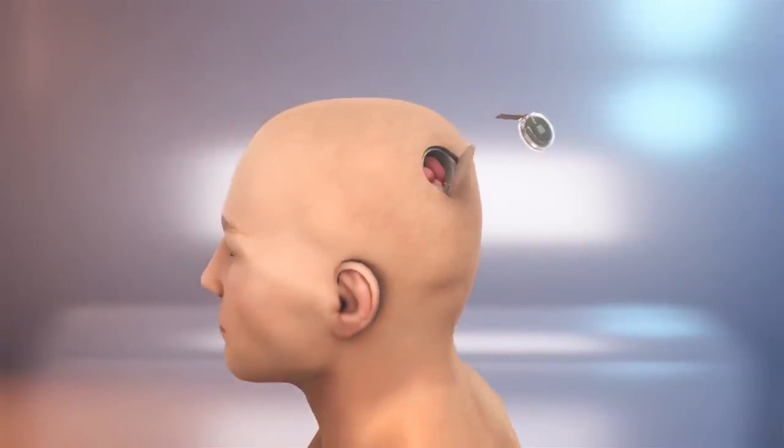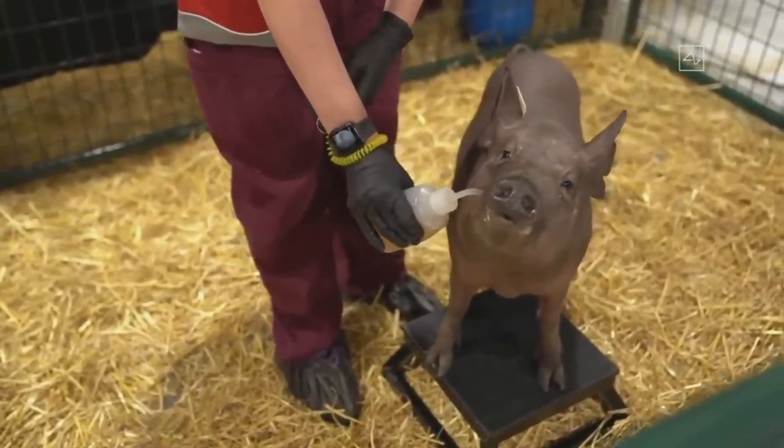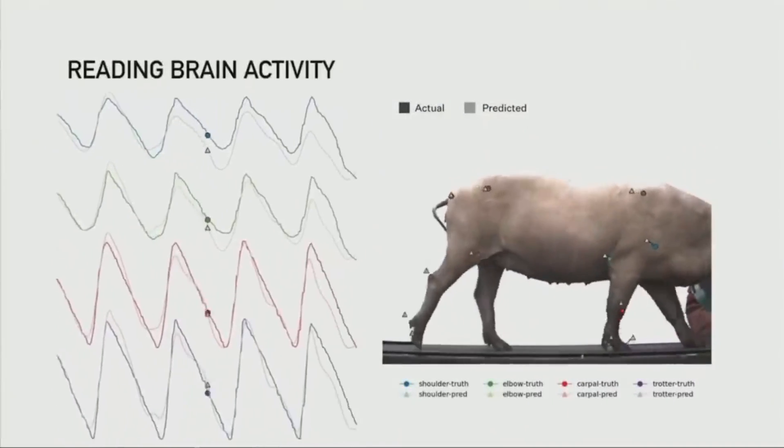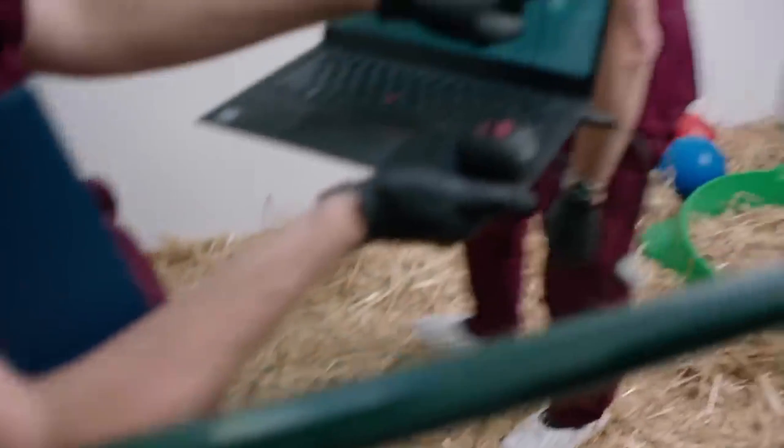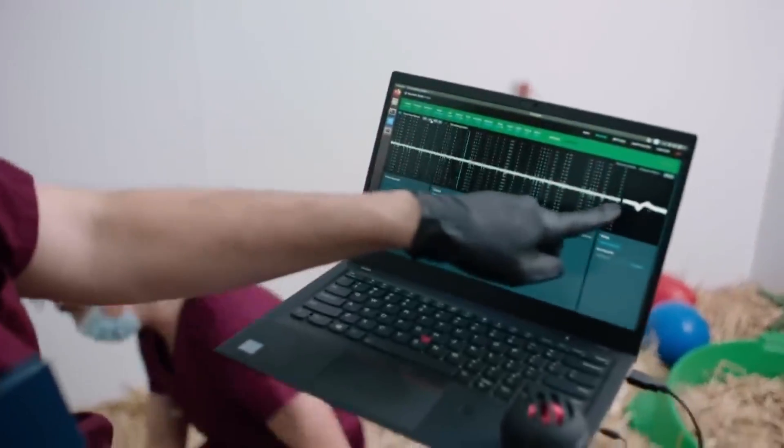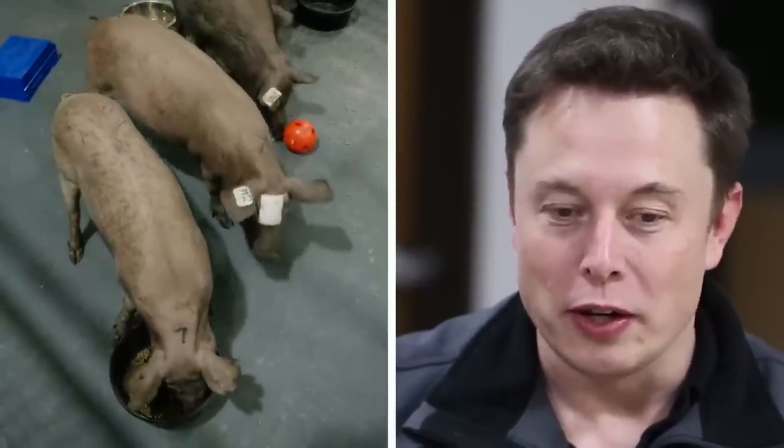Now if Neuralink has really received FDA approval to begin human testing, the company will be able to move forward with its clinical trials. These trials will almost certainly involve a small number of volunteers who will be given the Neuralink device and monitored over time to determine its safety and effectiveness.